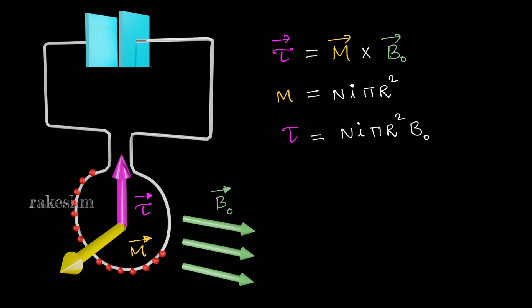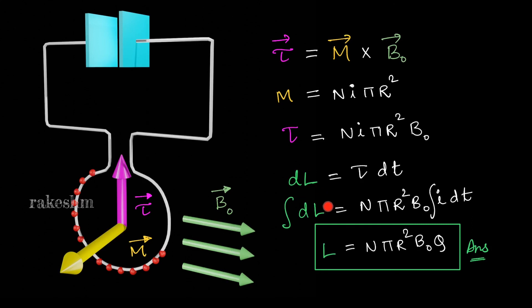We know dL = τ dt. Substituting the value of torque, we get dL = NπR²B₀I dt. We integrate both sides: the integral of dL is the angular momentum L which is acquired, and the integral of I dt is the total charge Q which has passed through the loop. So the final answer is L = NπR²B₀Q.